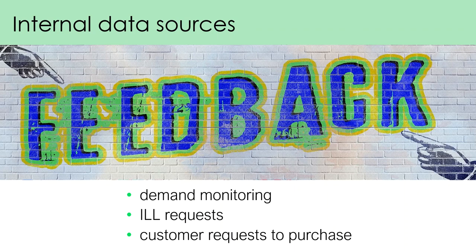Finally, there are a range of internal data sources that can also help identify items for potential selection. Demand monitoring, or looking at the volume of loans per copy, can assist librarians in deciding whether to purchase additional copies. Similarly, interlibrary loan requests or requests for purchase provide an indication of areas where the collection might need further development. Customer requests for purchases are also a useful way of identifying items on an item-by-item basis.